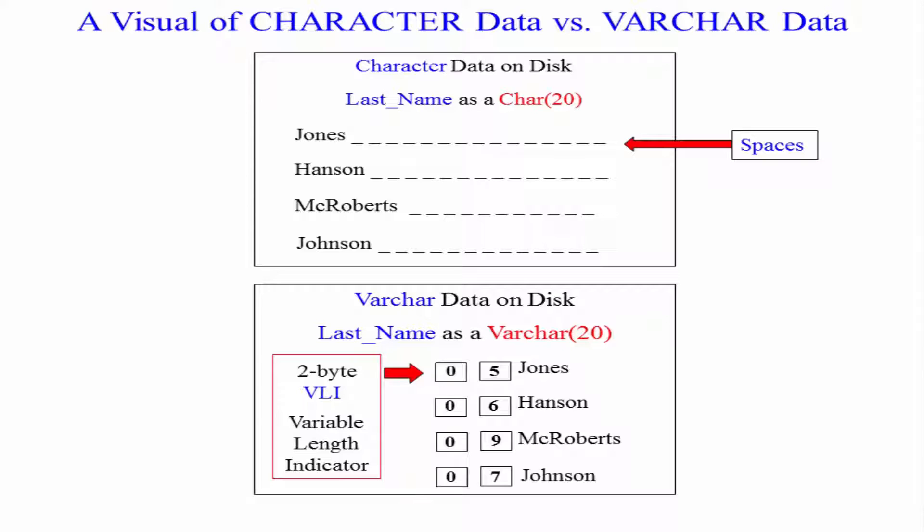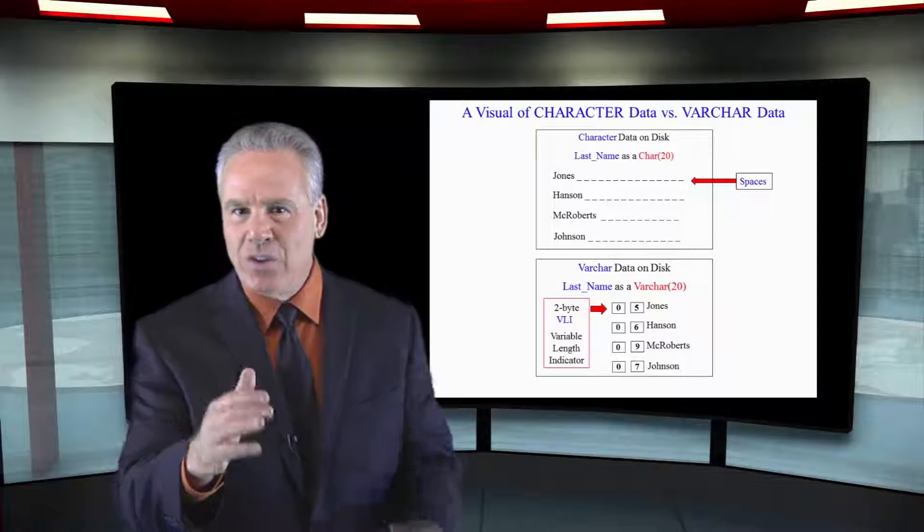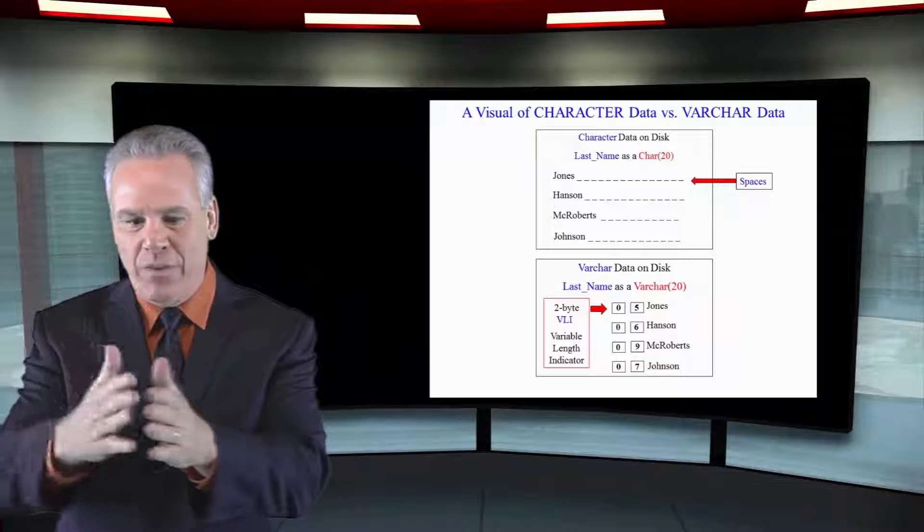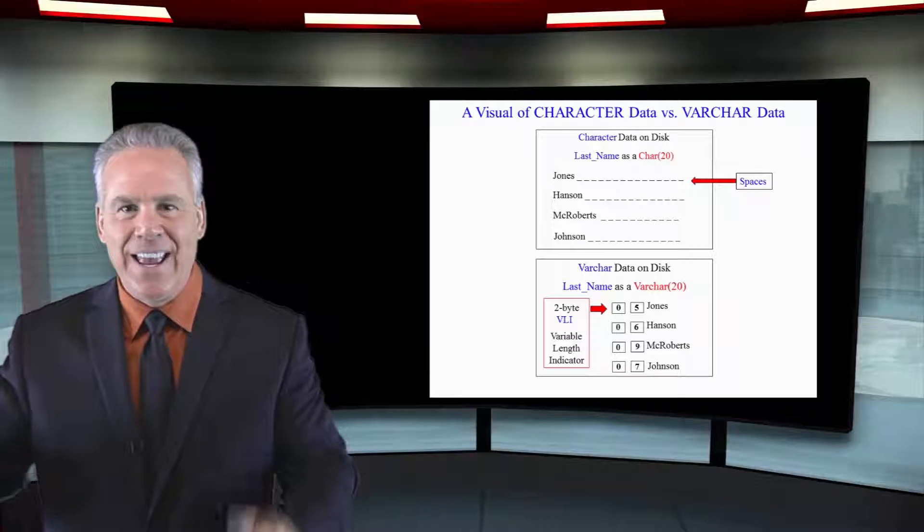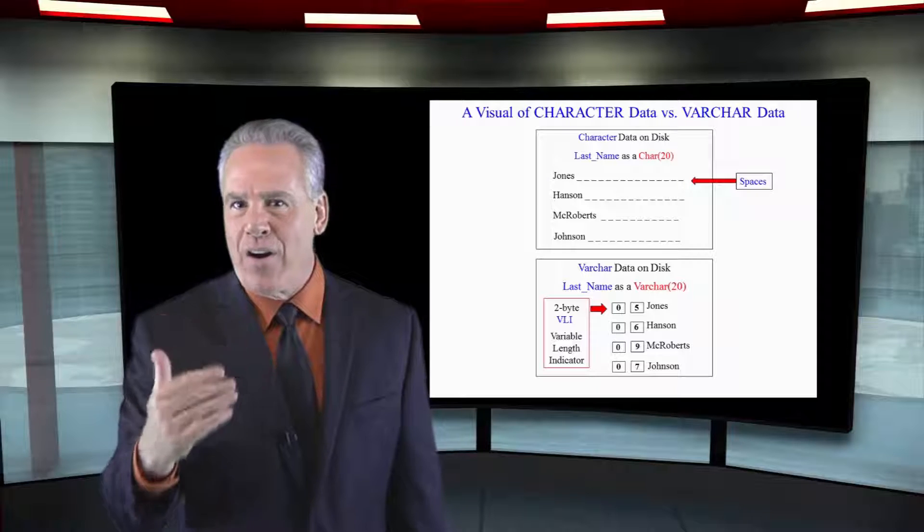Now VARCHAR is a little different. Take a look at this. We've got Jones if it was a VARCHAR, which would be J-O-N-E-S. It's only five characters, but in front of that they will have a variable length indicator that's one or two bytes. So you don't have to use up all 20 spaces or whatever the VARCHAR length is. And that's really the idea behind character and VARCHAR data.